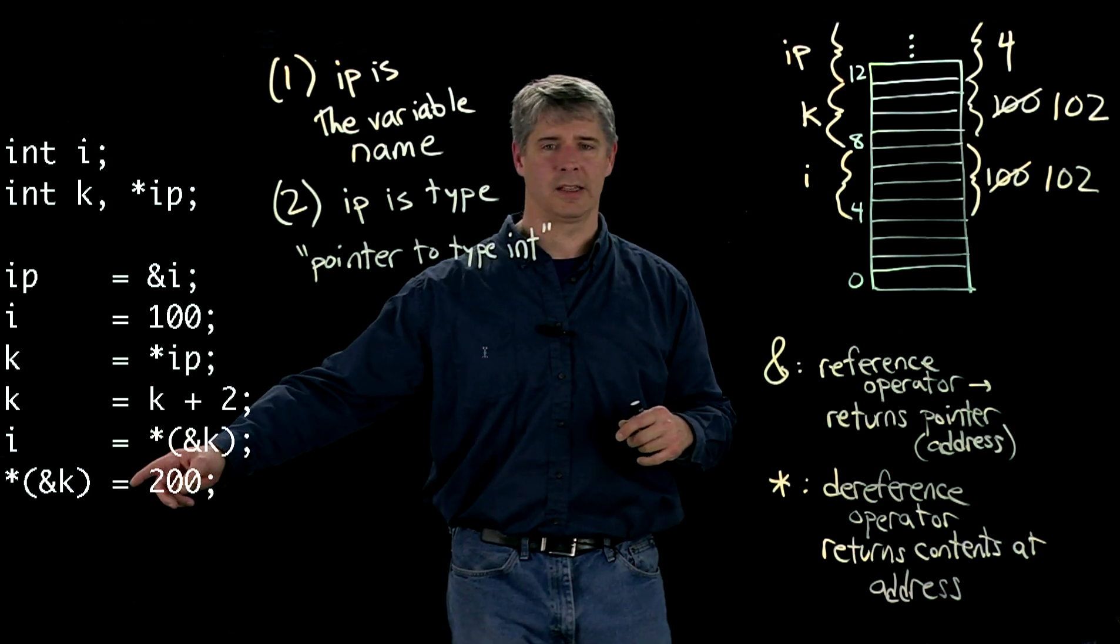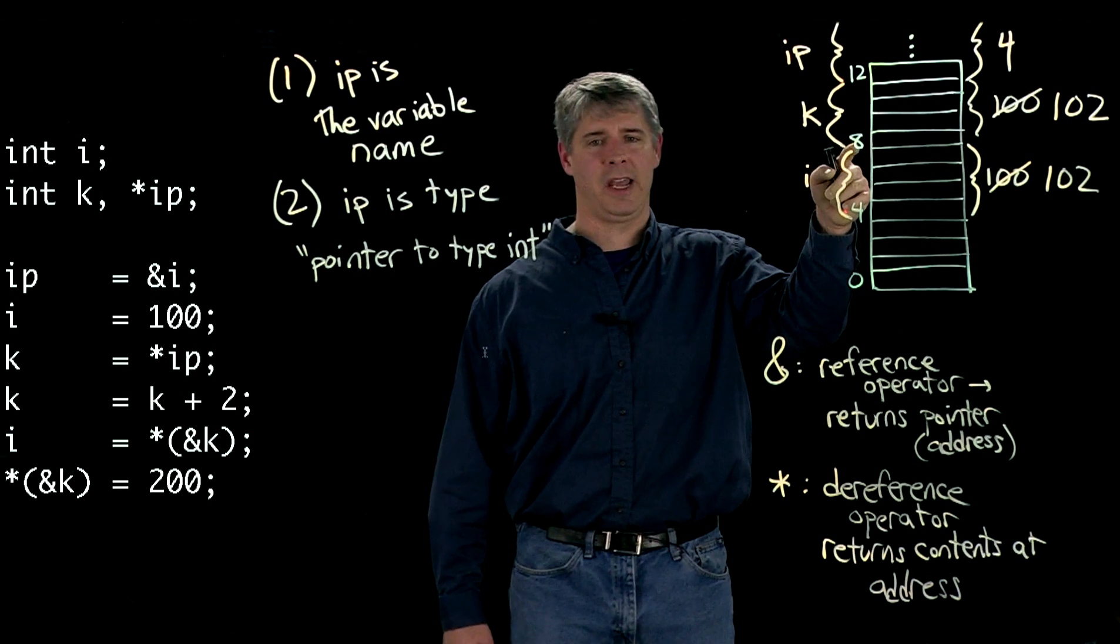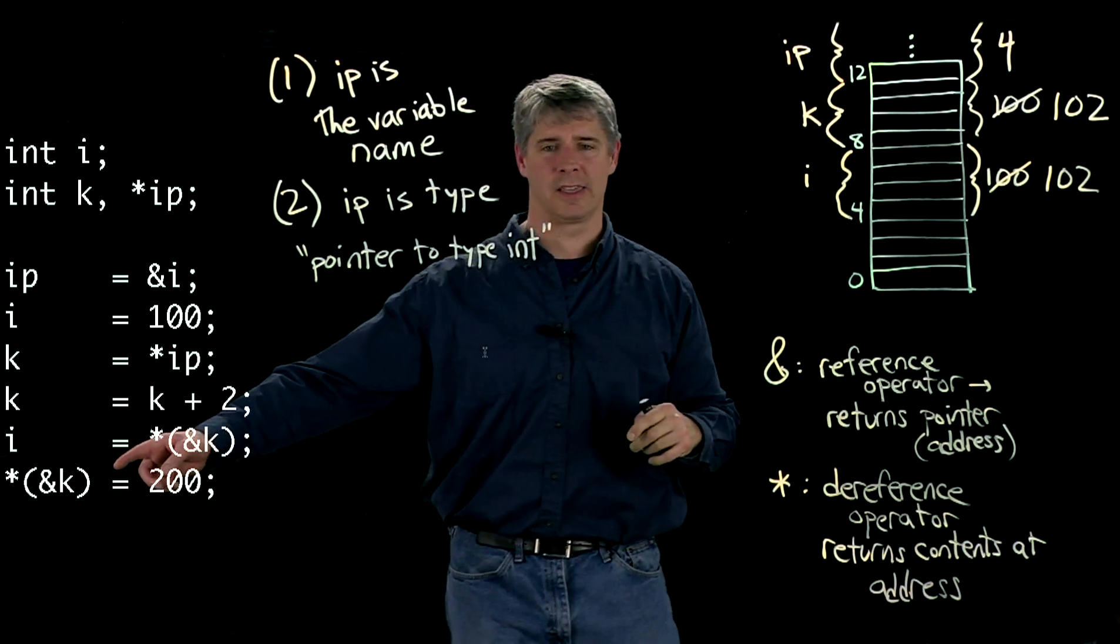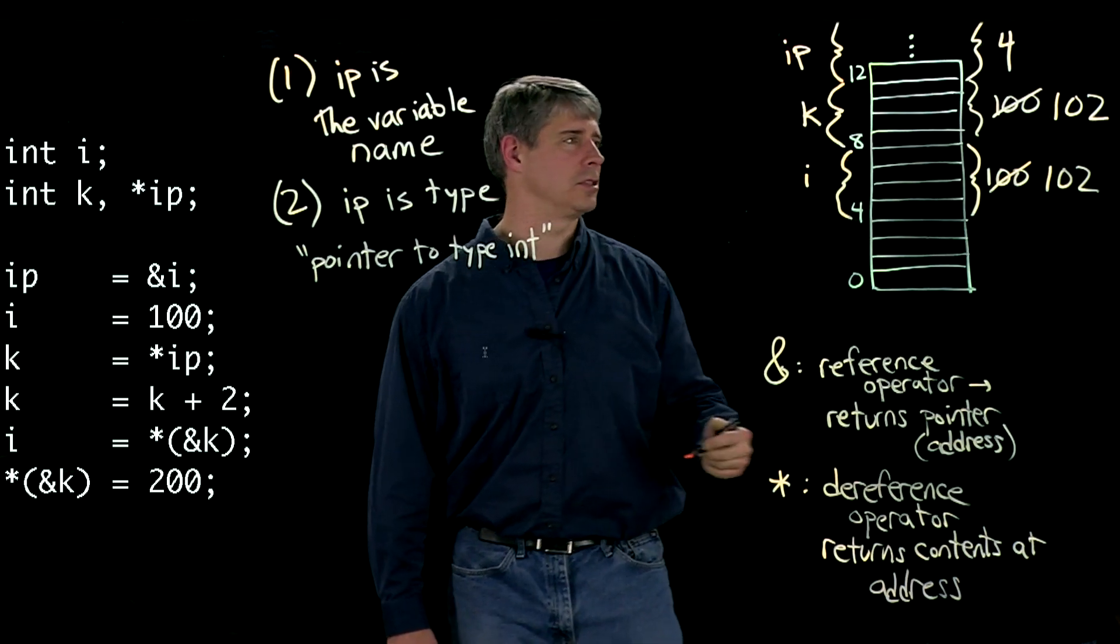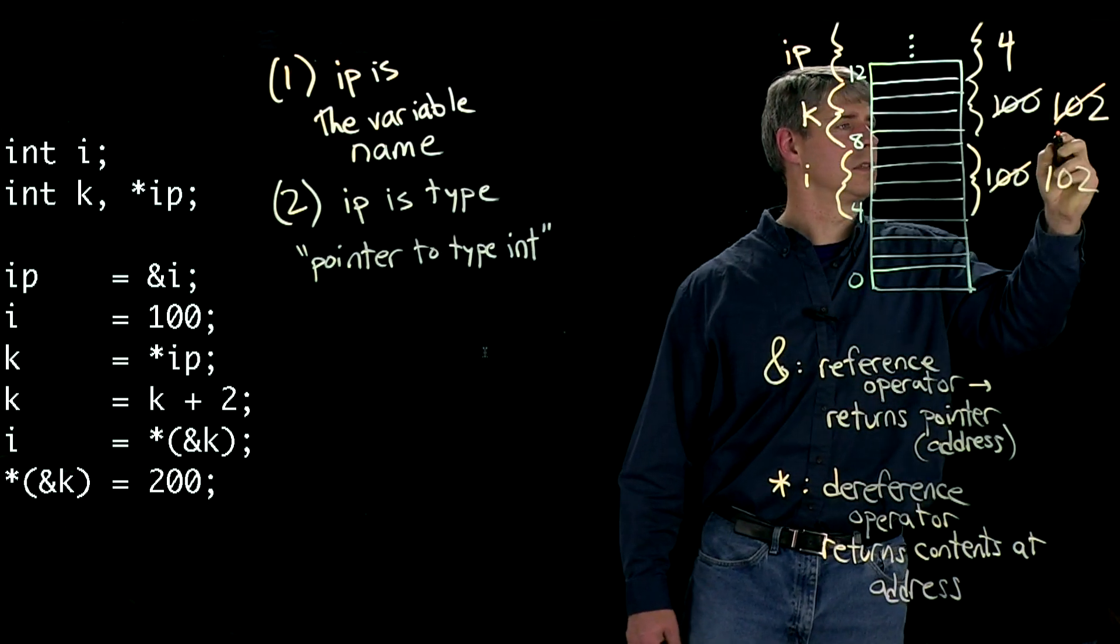And finally, in this last line, we're going to take the address of k again, which is 8. And we're going to set the contents there by taking the star or the dereference operator. And then setting the contents equal to 200. So this changes to 200.